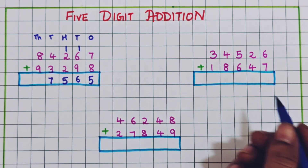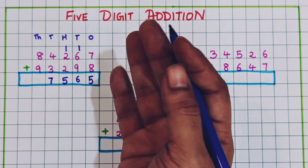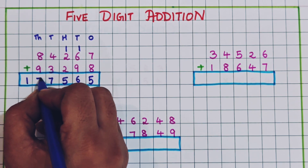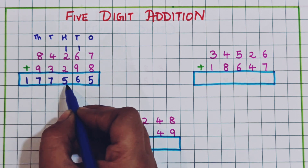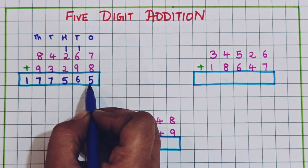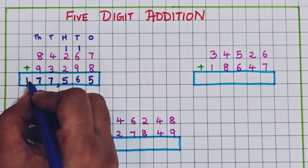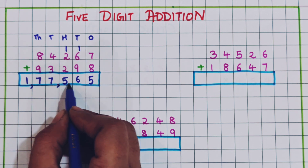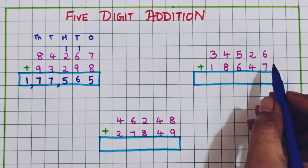Now 8 plus 9: counting — 10, 11, 12, 13, 14, 15, 16, 17 — so we write 17. The answer is 1 lakh 77,565. If you're getting confused, you can give commas after the first three digits and then after two digits: 1,77,565.